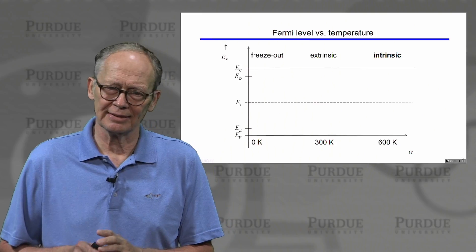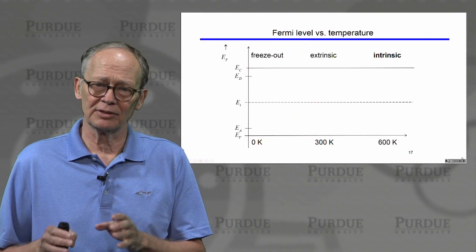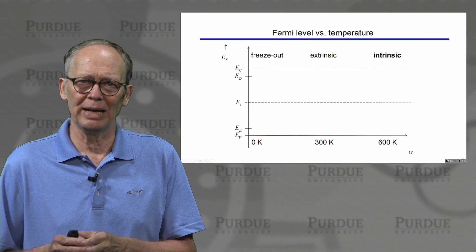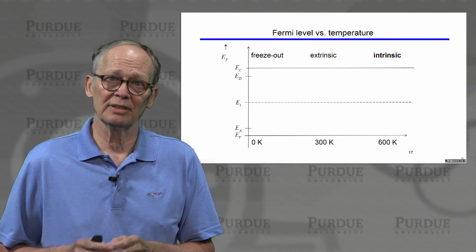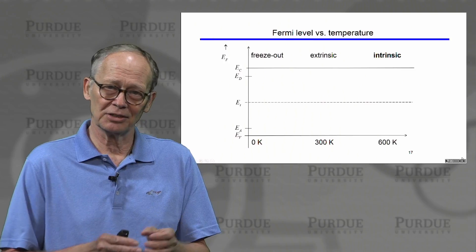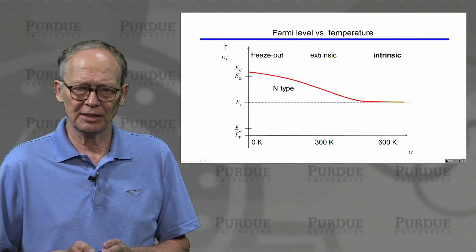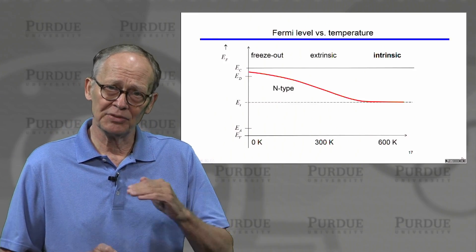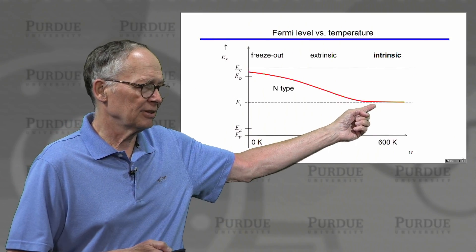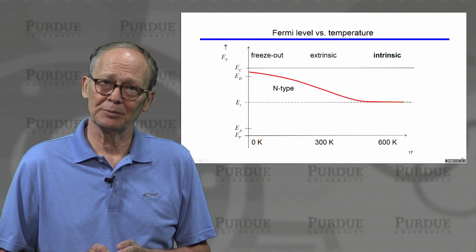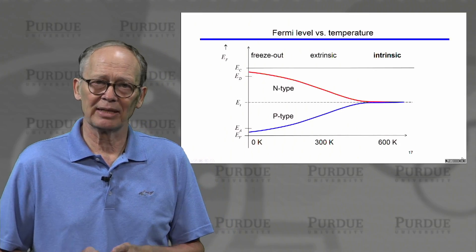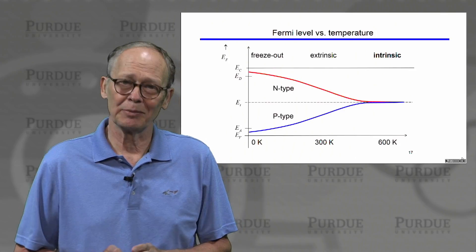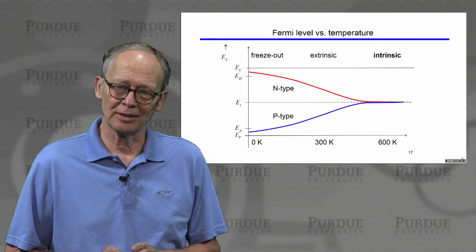The final topic we discussed is: knowing the carrier density versus temperature, how can we determine the Fermi level versus temperature? These two parameters are interchangeable — if we know the Fermi level we can deduce the carrier concentration, and vice versa. Qualitatively, at low temperatures the Fermi level in an n-type semiconductor has to be above the donor level because most donors are occupied. At high temperatures the semiconductor becomes intrinsic and the Fermi level moves to the intrinsic level. In a p-type semiconductor, an analogous thing occurs: the Fermi level is below the acceptor level at low temperatures, but at high temperatures when the semiconductor becomes intrinsic, it also ends up at the intrinsic level.